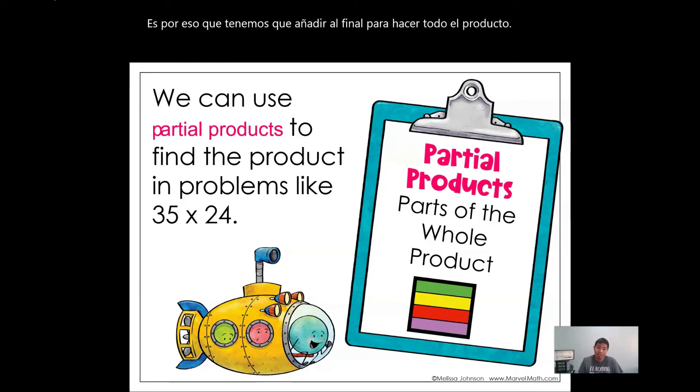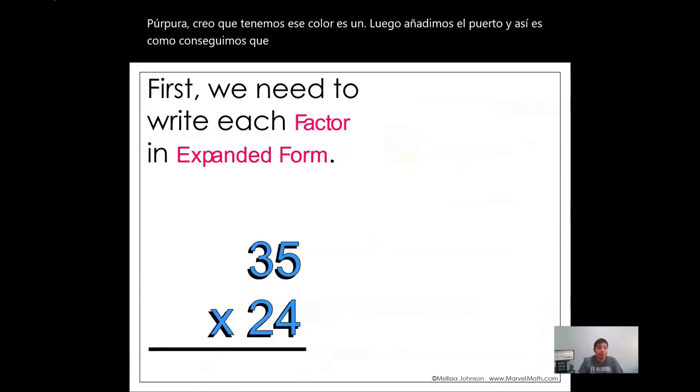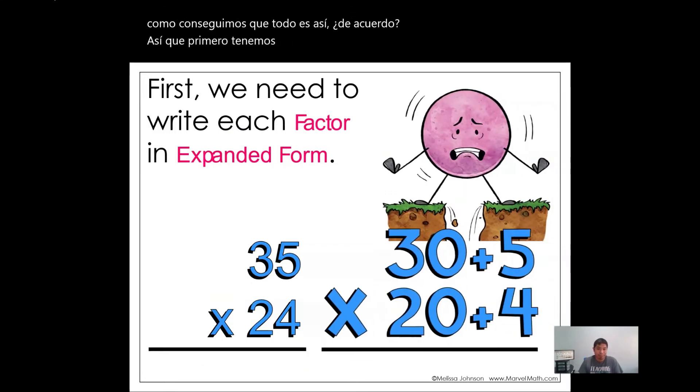See how we got green, then yellow, then red, then purple. And then we added the whole, and that's how we got the whole thing. So first we need to write each factor in expanded form. So we have 30 plus 5, and then 20 plus 4. So that's the values. That's why I say that we're going to be multiplying each digit times its value.